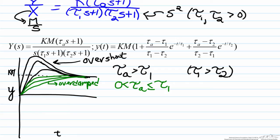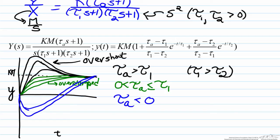The third case is when tau a is less than zero. When tau a is less than zero, the response dips below zero into negative territory, then works itself back up to the steady state. In this case, where the response starts in the direction of the opposite sign and ends at the opposite sign, this is known as an inverse response.